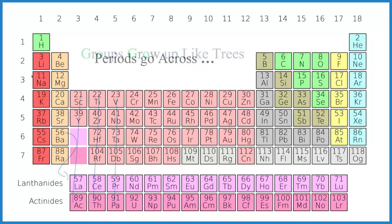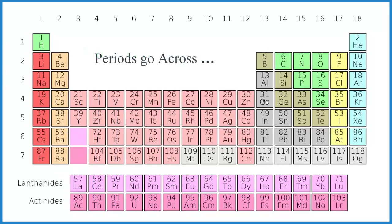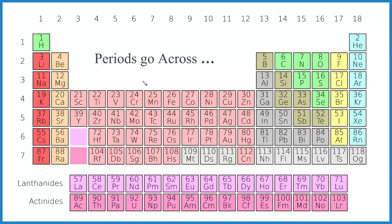All right, periods. Periods go across on the periodic table. They're the rows. And you can think of it as we have dot, dot, dot. There's the periods right there in a line.